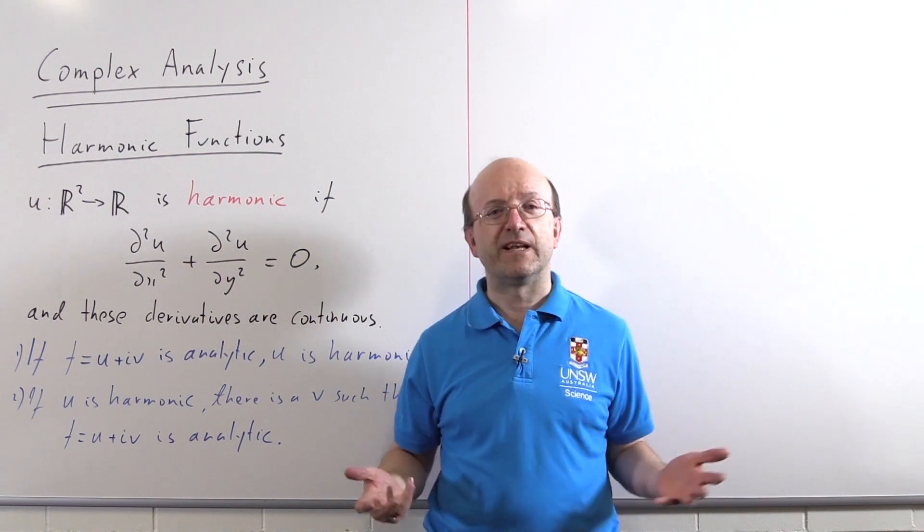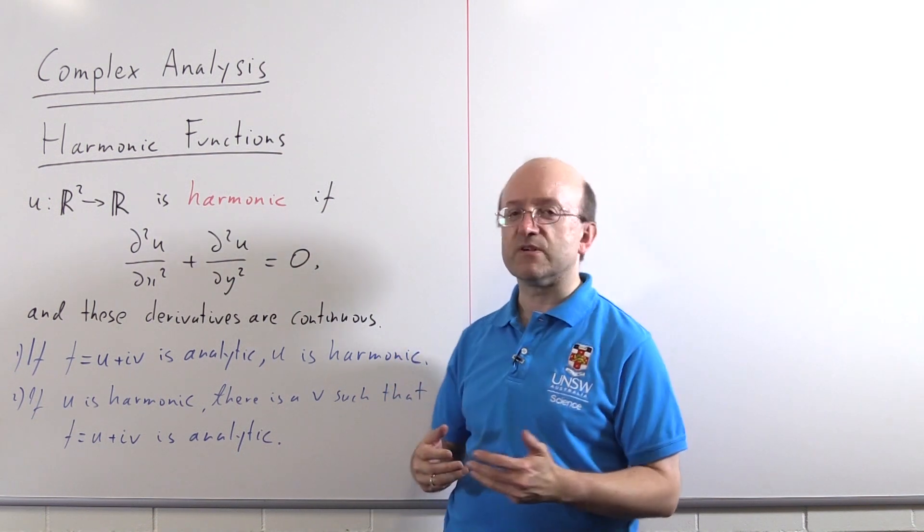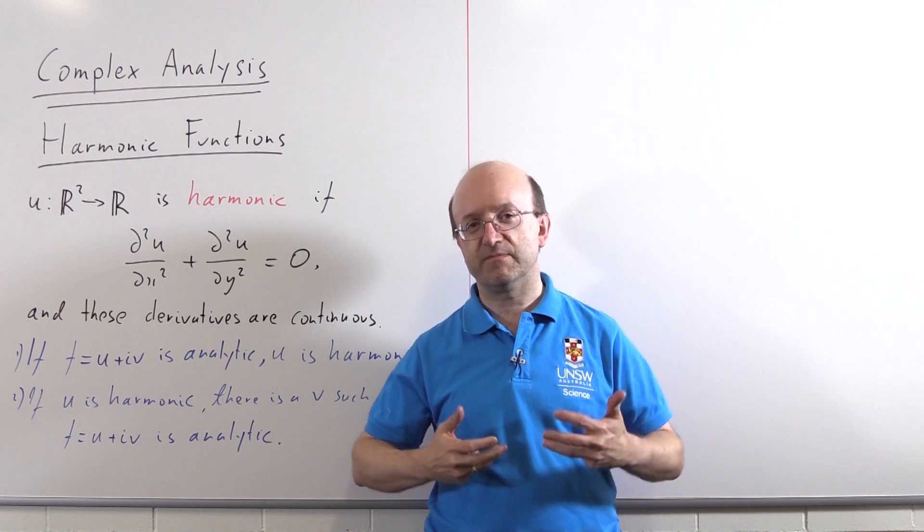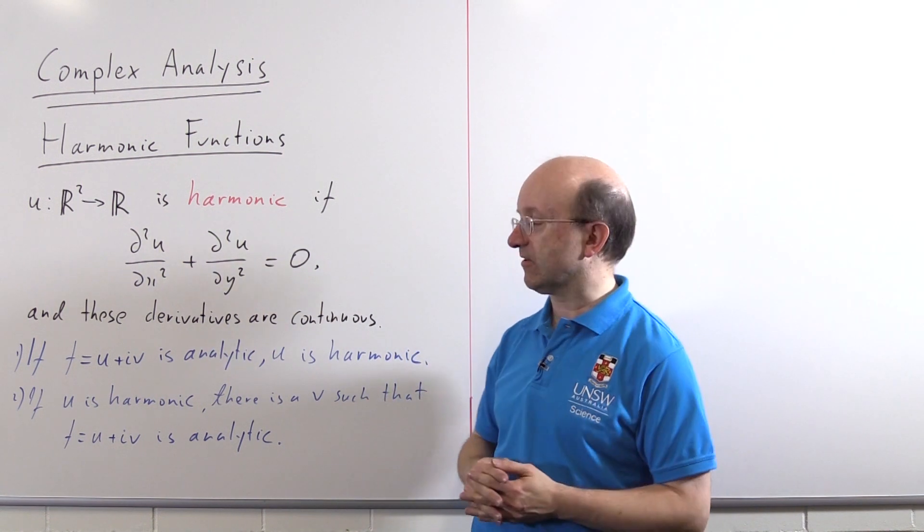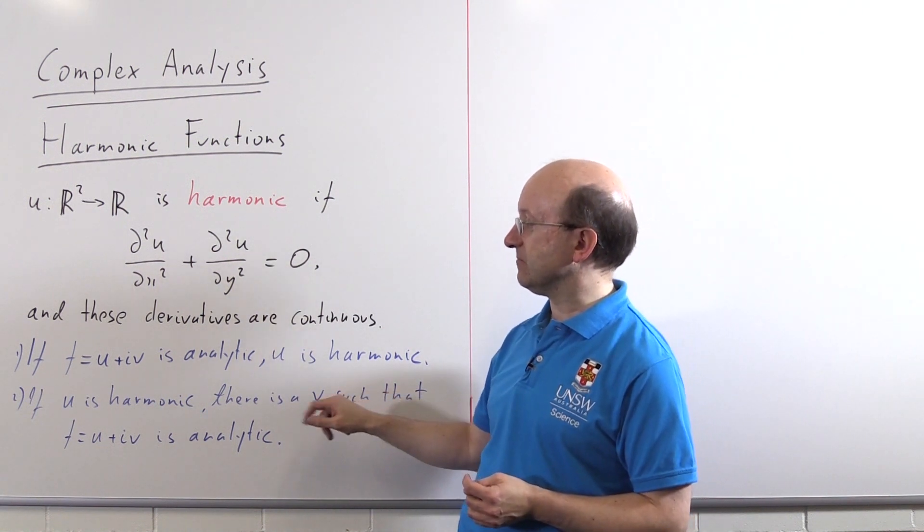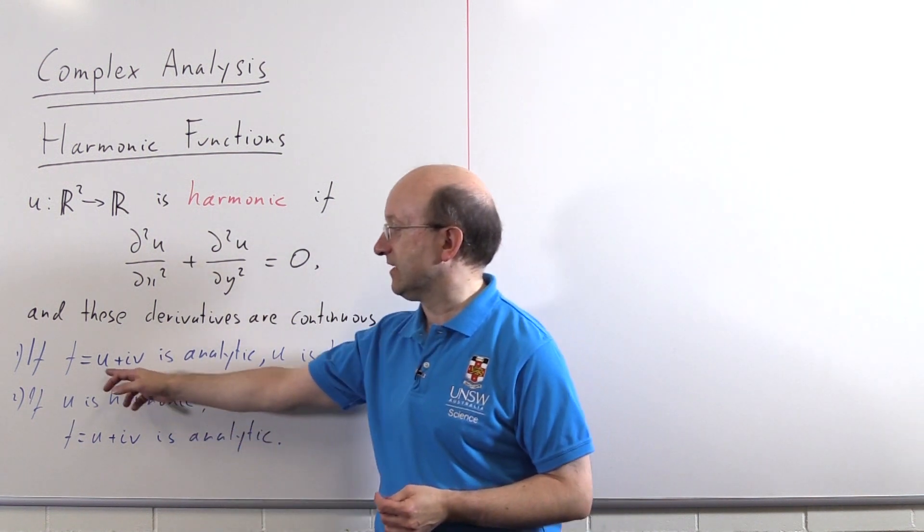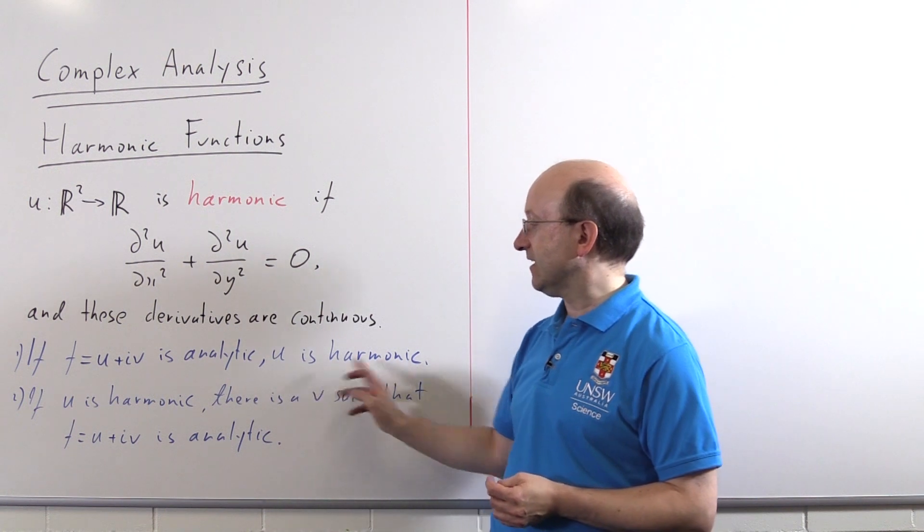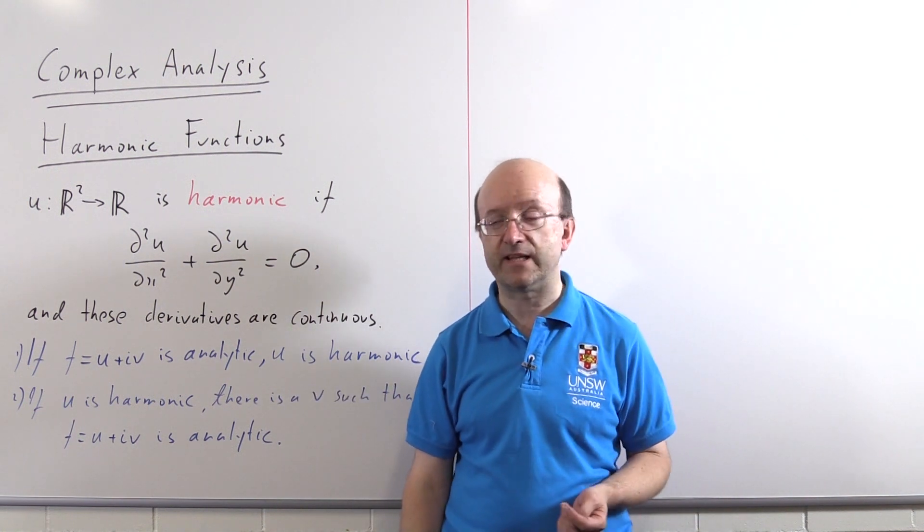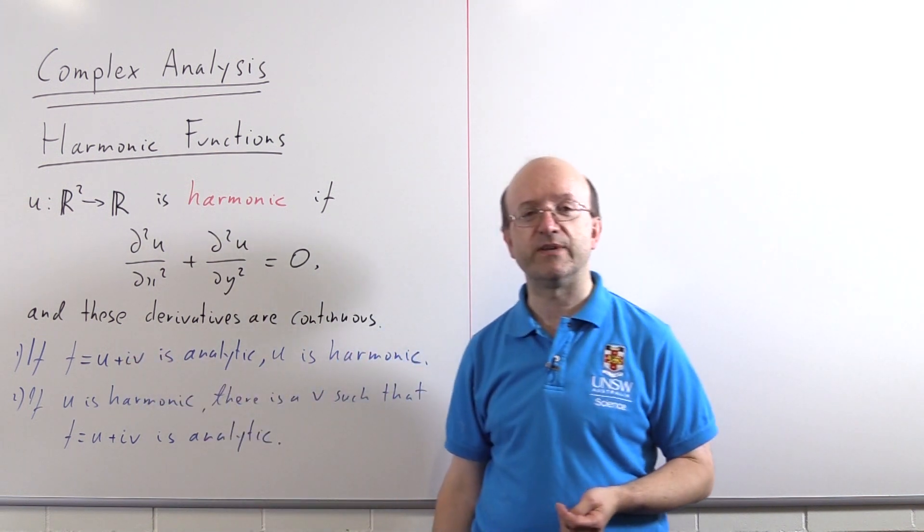It might seem odd, why would we look at real valued functions in a course in complex analysis? Well, it's because harmonic functions have a very deep link to analytic functions, which are very important in complex analysis. We've got two results here. If you've got a complex value function f written as u + iv, if f is analytic, then u is automatically harmonic. In fact, v is harmonic as well, but we normally concentrate on the real part.